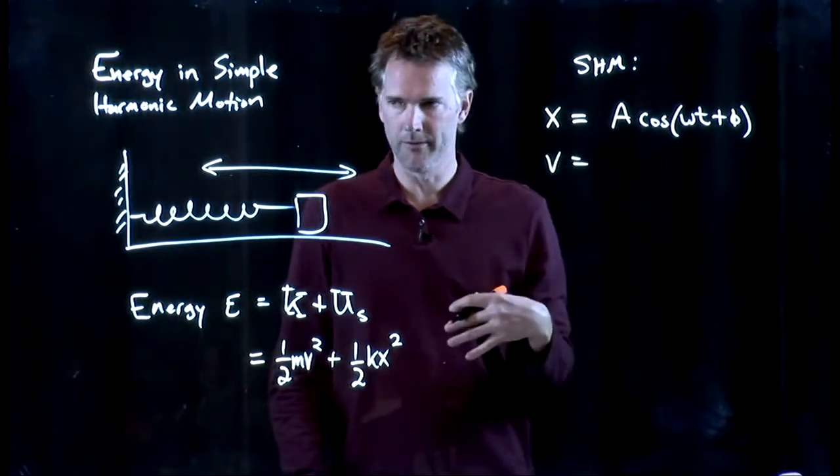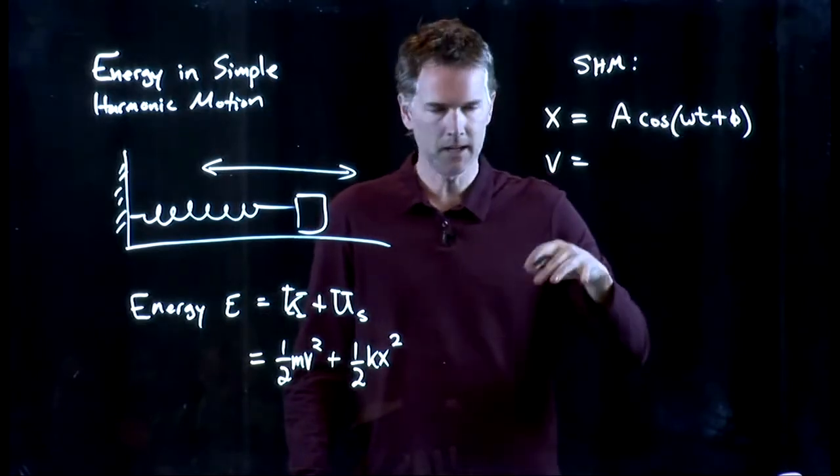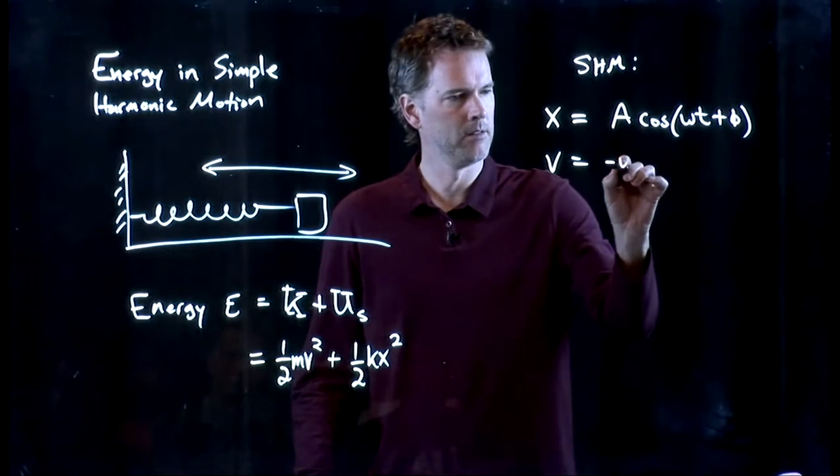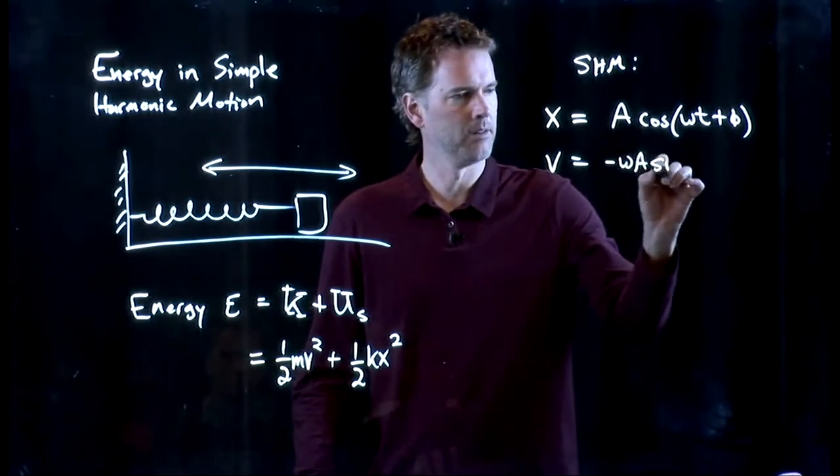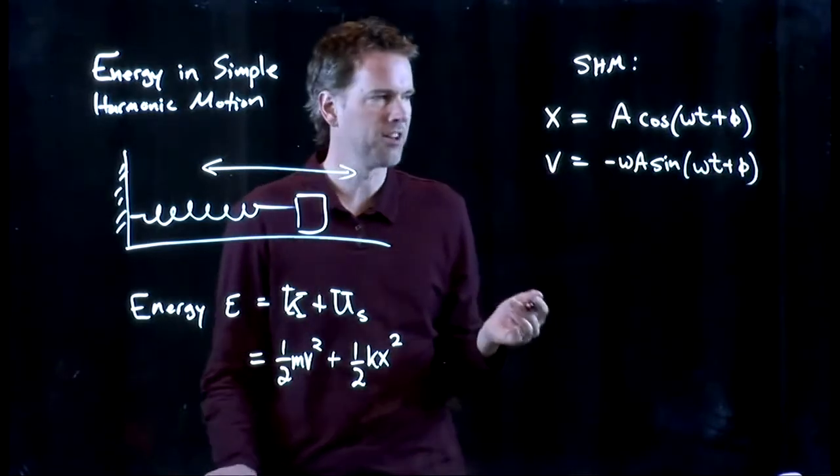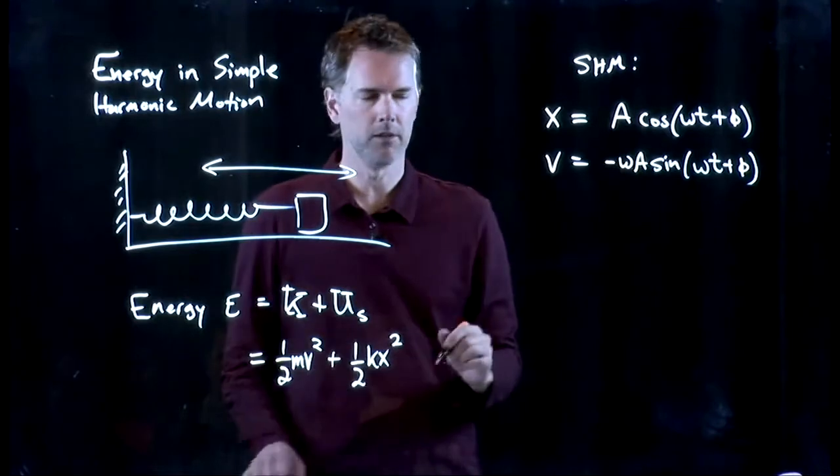And when we do that, cosine becomes negative sine. I have to pull out an omega from inside the argument. And so v is this: negative omega A sine of omega t plus φ. And now I can put all that back into this equation.